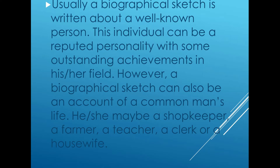In whichever field he is — whether he is a cricketer, a singer, a celebrity, or a businessman — he should have achieved something outstanding in that respective field. For example, in business we can give the example of Mukesh Ambani, in cricket Sachin Tendulkar, and in singing Lata Mangeshkar. They are the reputed personalities who have achieved something outstanding in their fields.